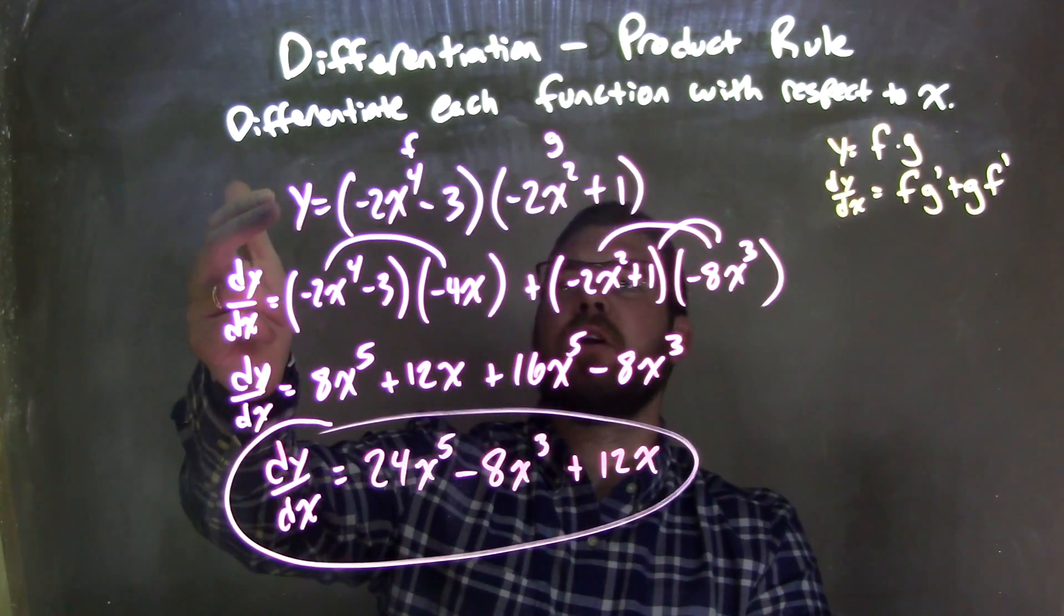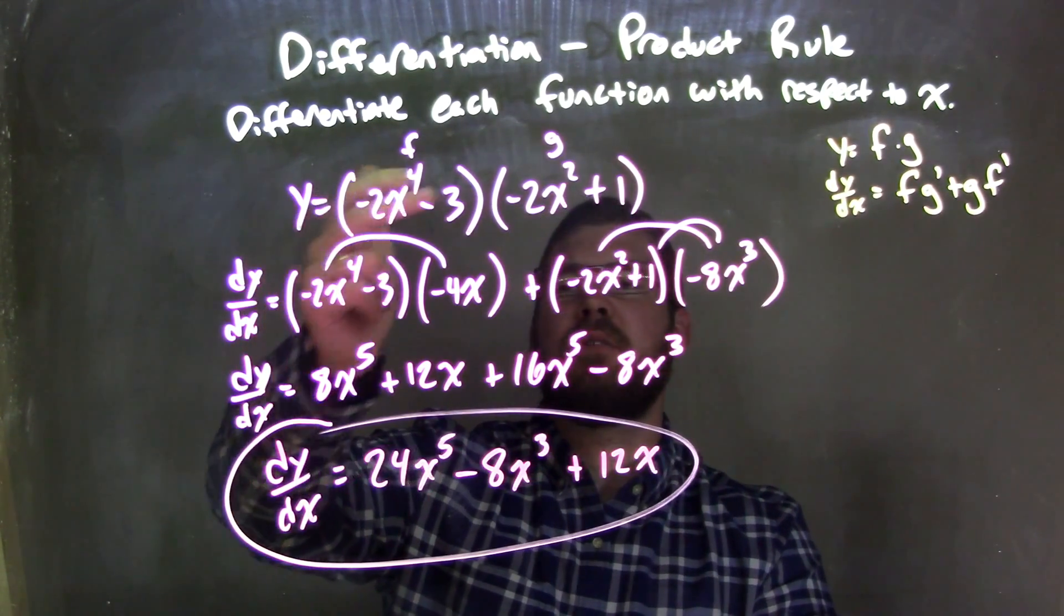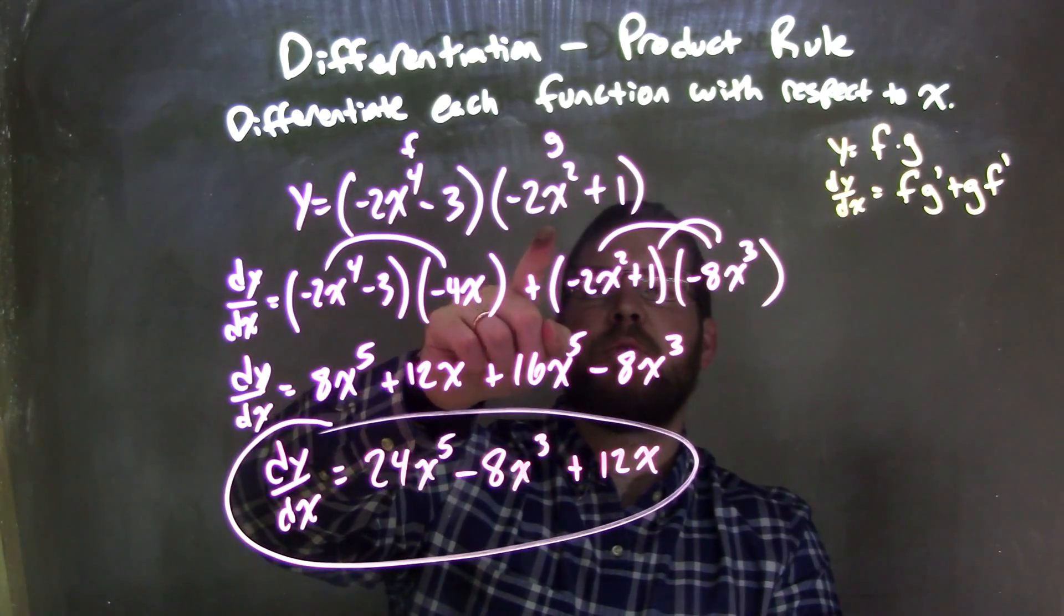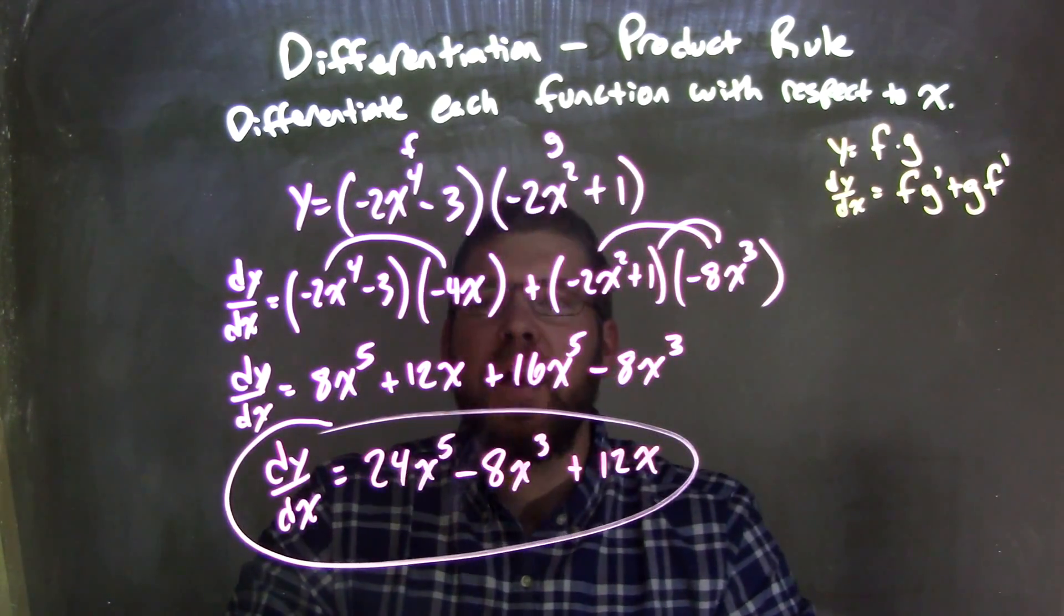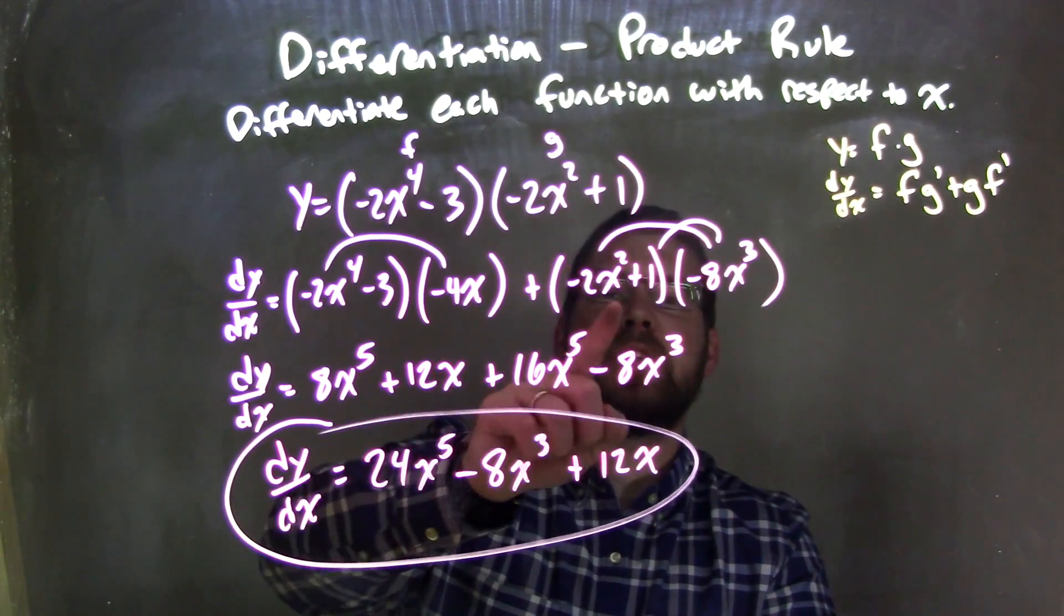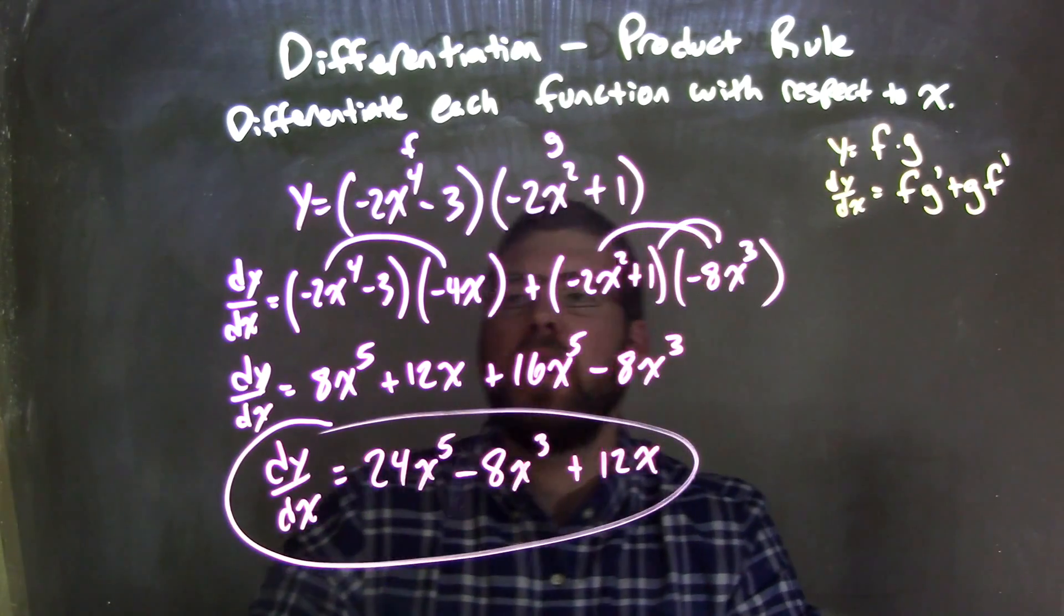So let's recap. We're going over our function here, y equals negative 2x to the 4th minus 3, which we call f, times negative 2x squared plus 1, which we call g. I apply the product rule, which was f times g prime plus g times f prime, and then I simplify by distributing.